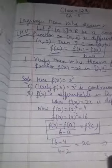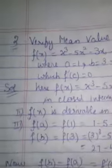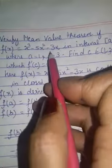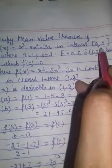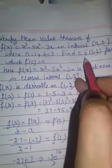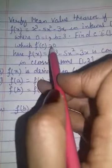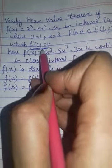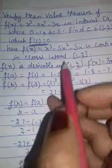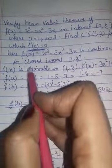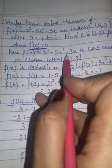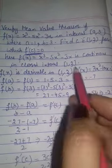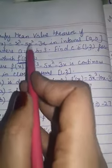Next one is verify mean value theorem if f(x) is given in the interval [a,b]. a is given, b is given. Find c for which f'(c) equals 0 is given to you. Here you have given this is 0, find c only. f(x) is continuous in closed interval, yes, because of algebraic. Derivable also in open interval. Take its derivative: 3x² - 10x minus 3.